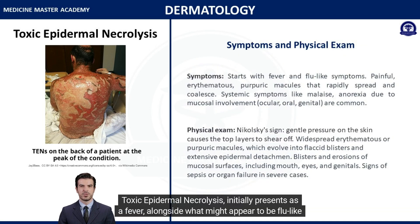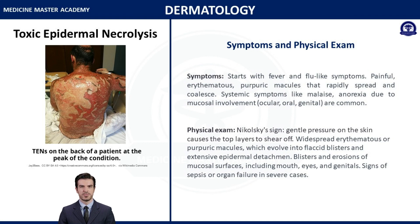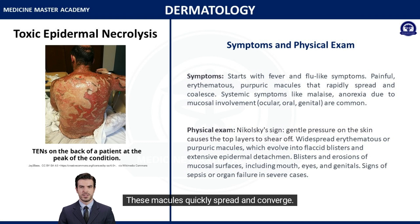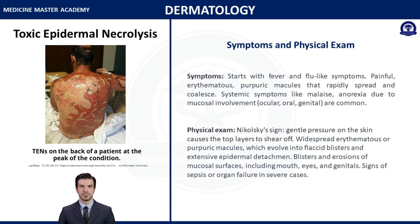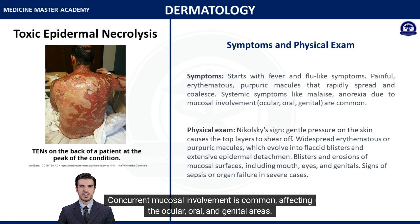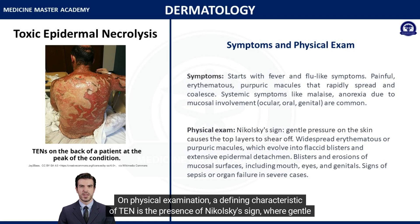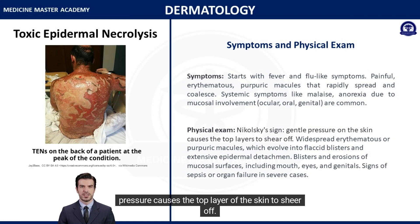Toxic epidermal necrolysis initially presents as a fever alongside flu-like symptoms. This progresses to painful skin changes that emerge as erythematous or purpuric macules, which quickly spread and converge. Concurrent mucosal involvement is common, affecting the ocular, oral, and genital areas. On physical examination, a defining characteristic of TEN is the presence of Nikolsky's sign, where gentle pressure causes the top layer of the skin to shear off.